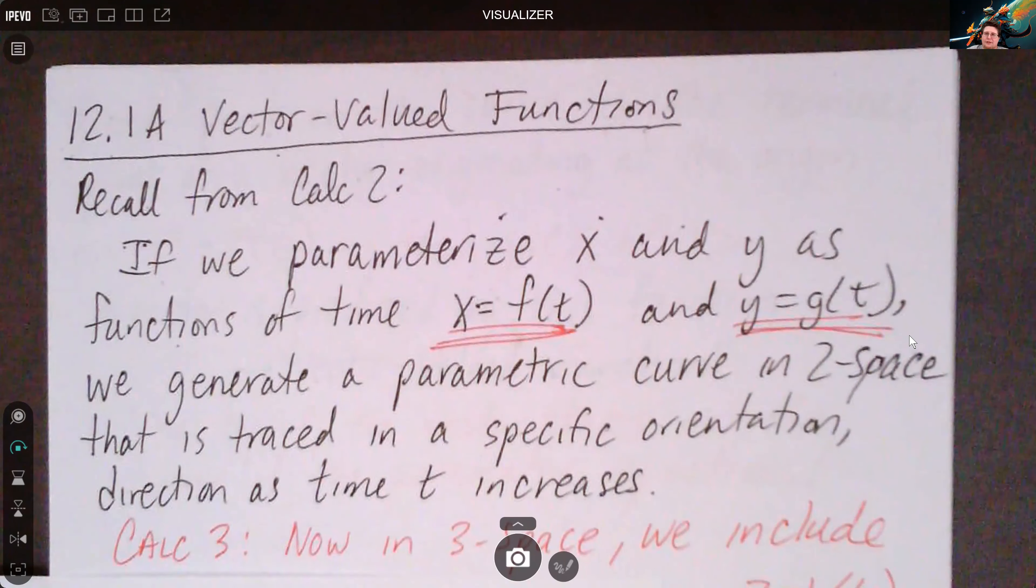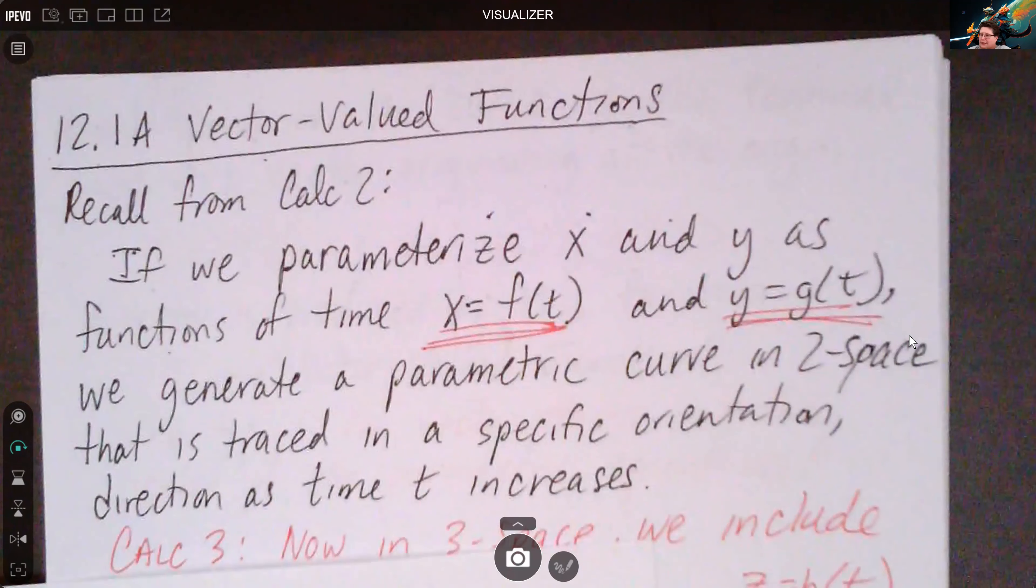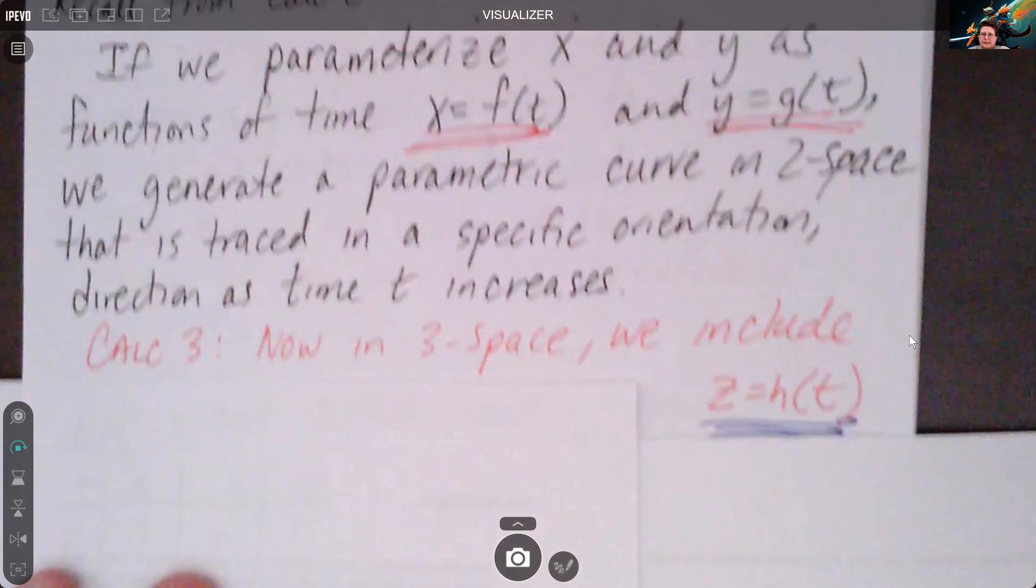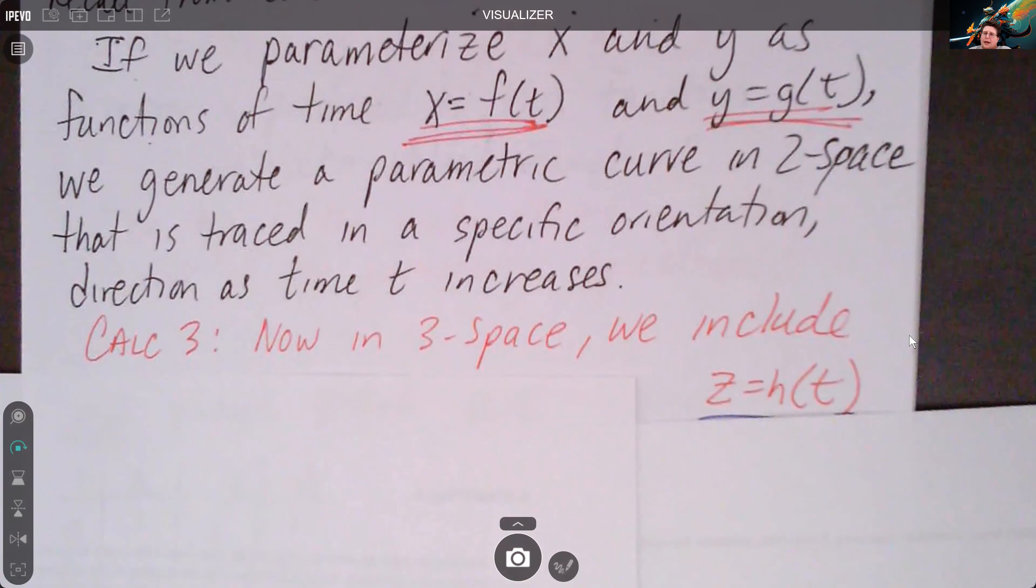We generally use t for time as time progresses. While in Calc 3, we are going to upsize it. Now we're going in 3-space and z is going to - we'll use h of t for that.